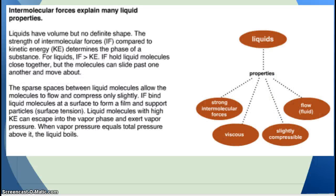Intermolecular forces explain many liquid properties. Liquids have volume but no definite shape. The strength of intermolecular forces compared to kinetic energy determines the phase of a substance. For liquids, intermolecular forces are greater than the kinetic energy, holding liquid molecules close together, but the molecules can slide past one another — like marbles in the back of a truck — and flow. The sparse spaces between liquid molecules allow them to compress only slightly. Intermolecular forces also bind liquid molecules at a surface to form a film, which is surface tension. When vapor pressure equals total pressure above the liquid, the liquid will boil.